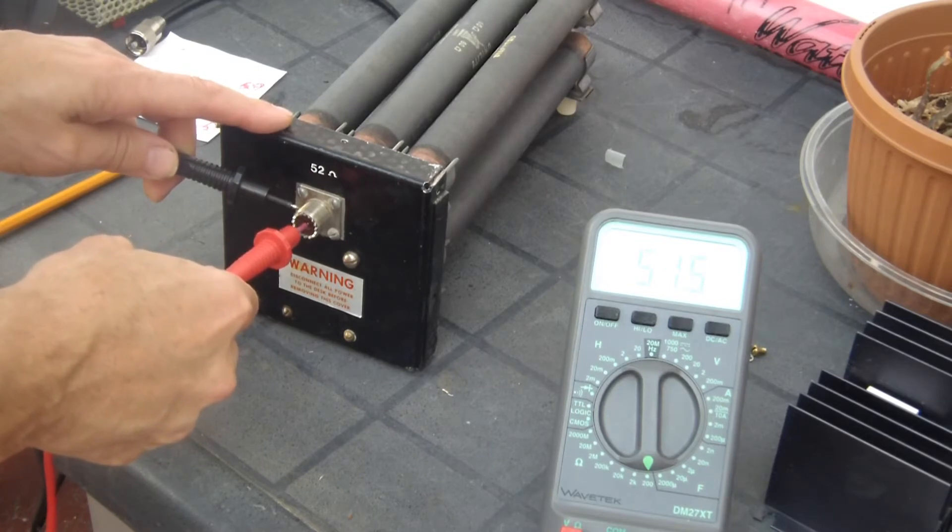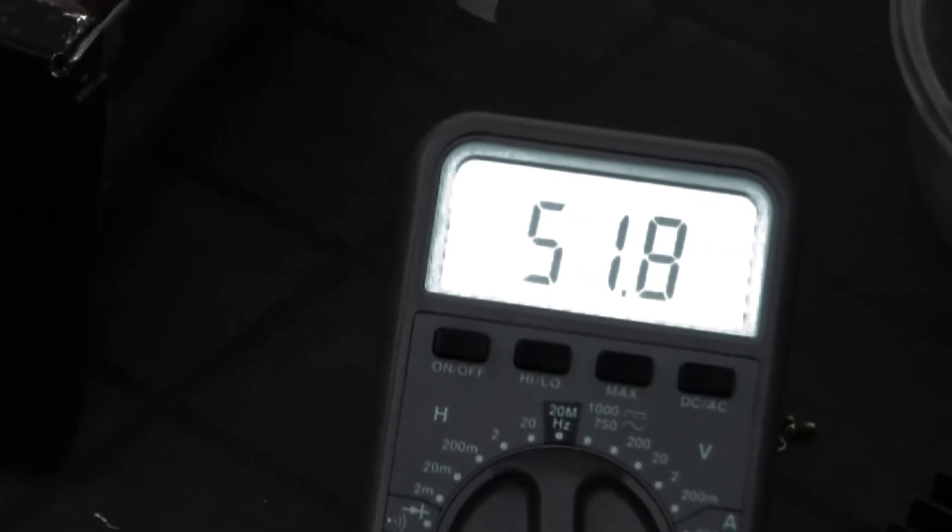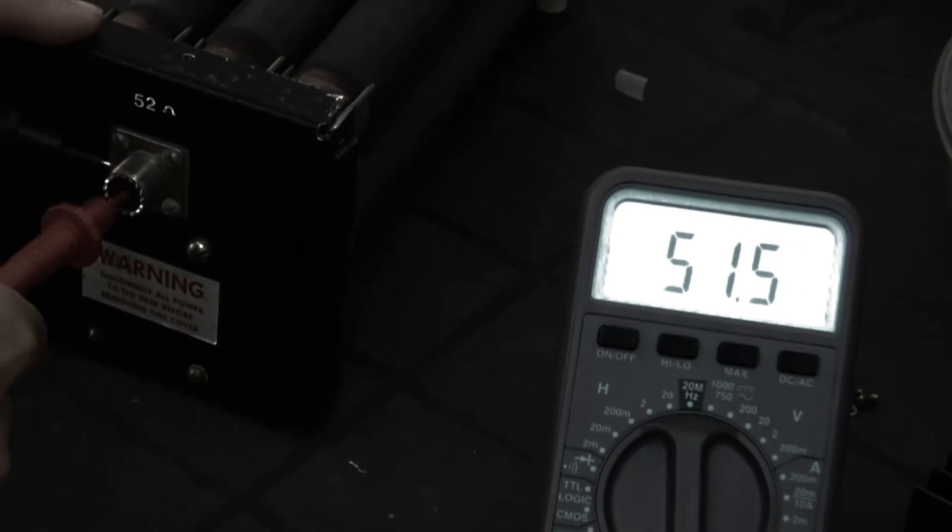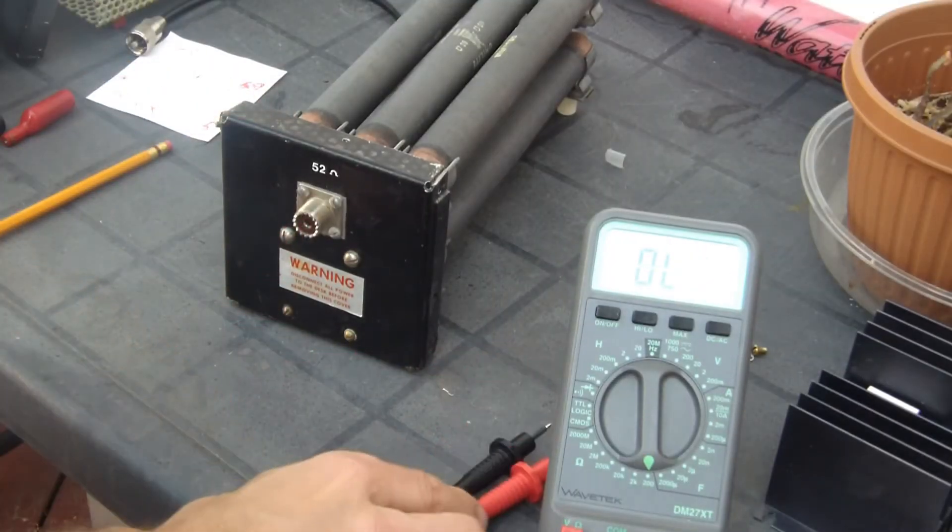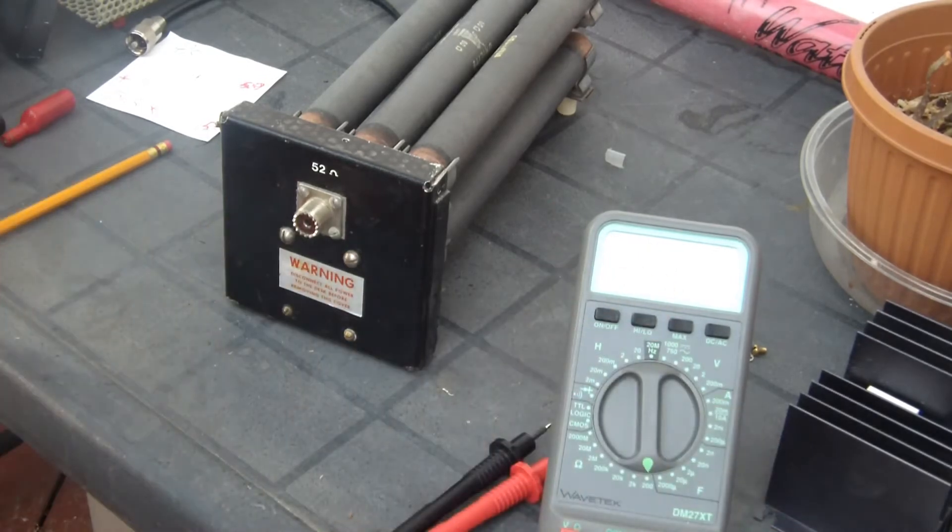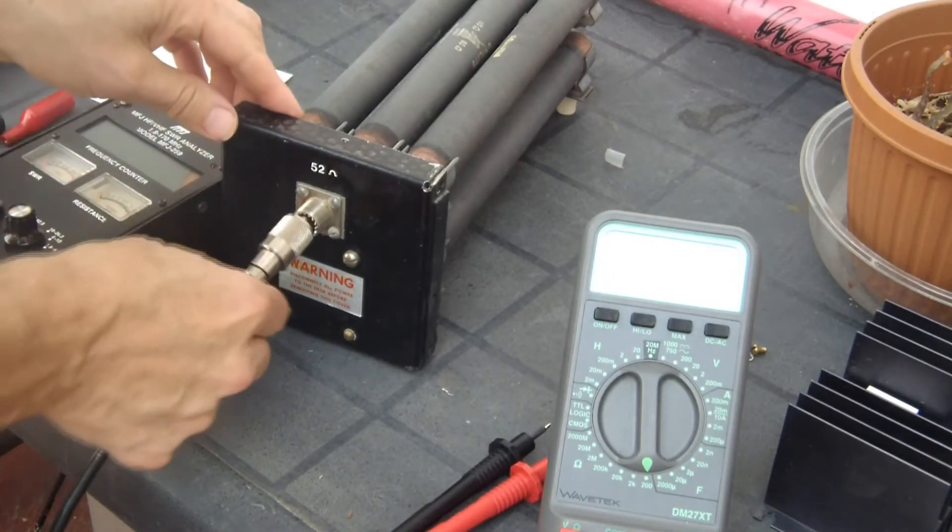Well that's looking pretty good. 51.5 ohm. That's pretty close to 52. Okay, let's hook up the MFJ here.